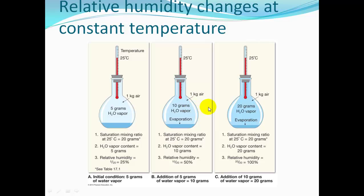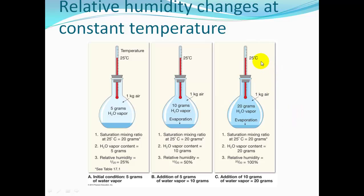Adding water to 10 grams of water vapor in one kilogram of air at 25 degrees Celsius gives 10 divided by 20 — 50% relative humidity. The air can hold 20 grams but has 10, that's half of what it could hold. Adding 10 more grams gives 20 grams of water vapor — 20 divided by 20 is 100% relative humidity.